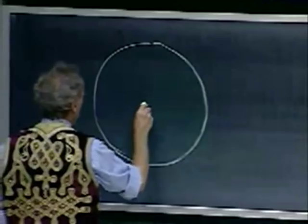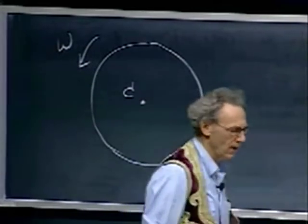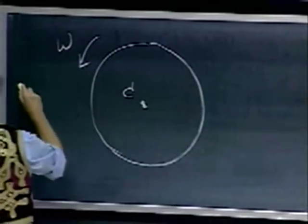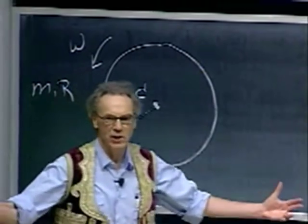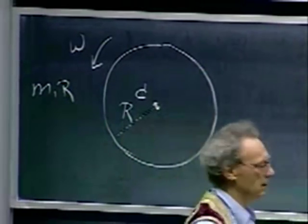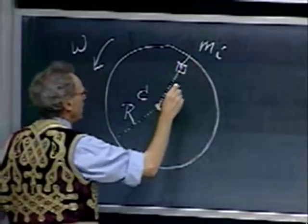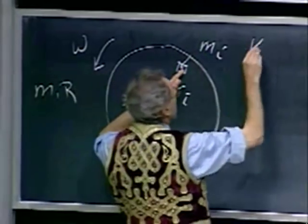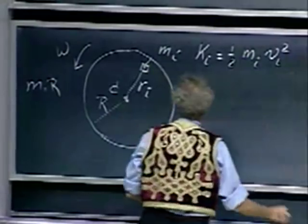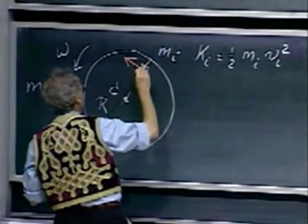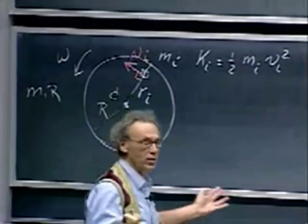I have a disk. The center of the disk is c, and this disk is rotating with angular velocity omega, which could change in time. The disk has mass m and radius r. I take a little mass element mᵢ at radius rᵢ. The kinetic energy of that element alone equals ½mᵢvᵢ², and v = omega·r always holds for rotating objects.